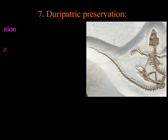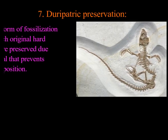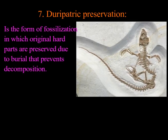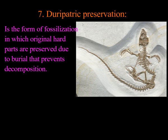The last process of fossilization is diagenetic preservation. It is a form of fossilization in which original hard parts like bones and teeth are preserved due to burial, which prevents decomposition.